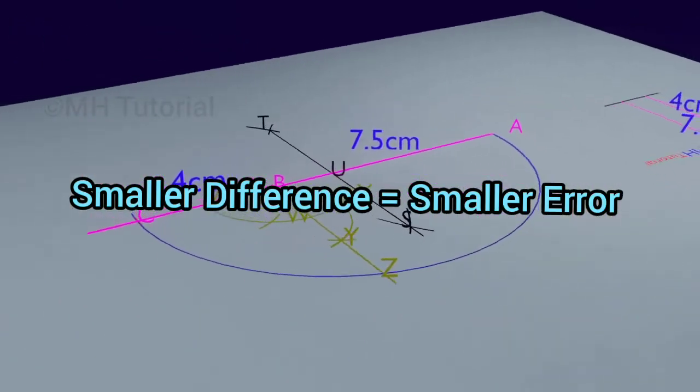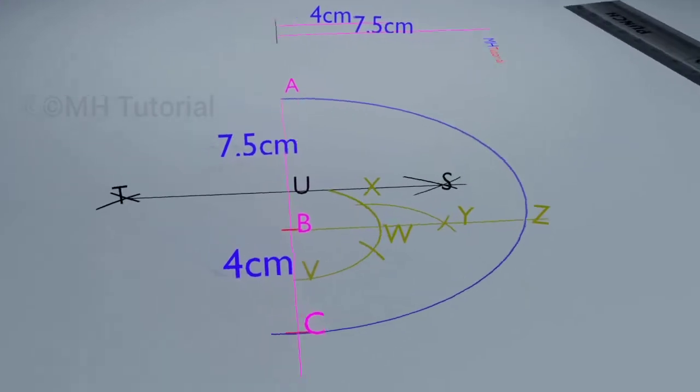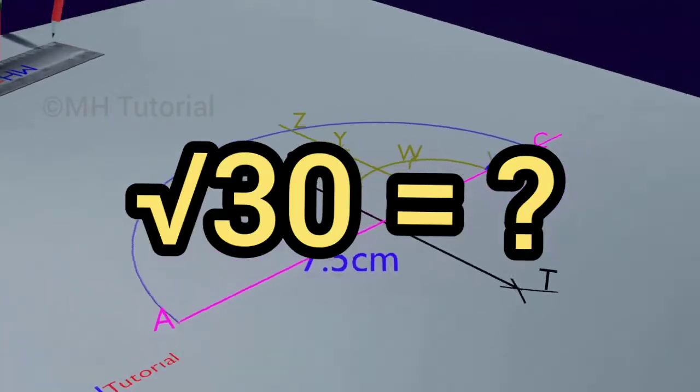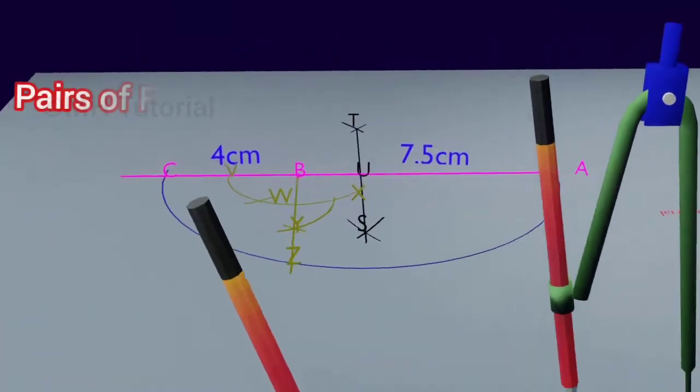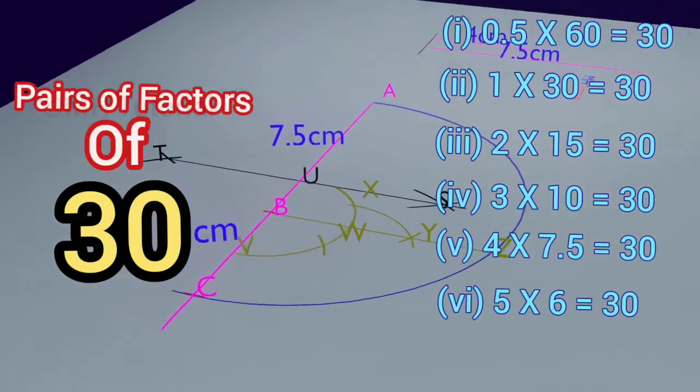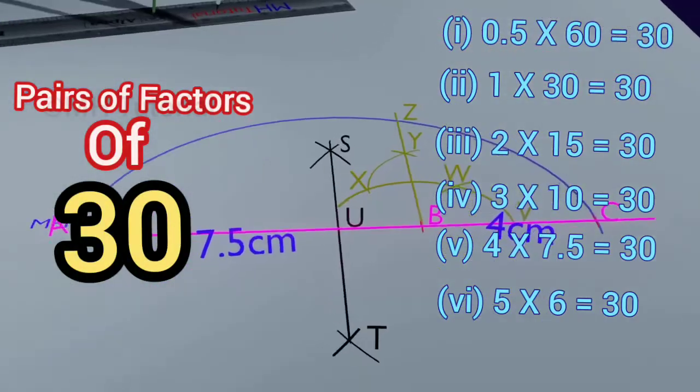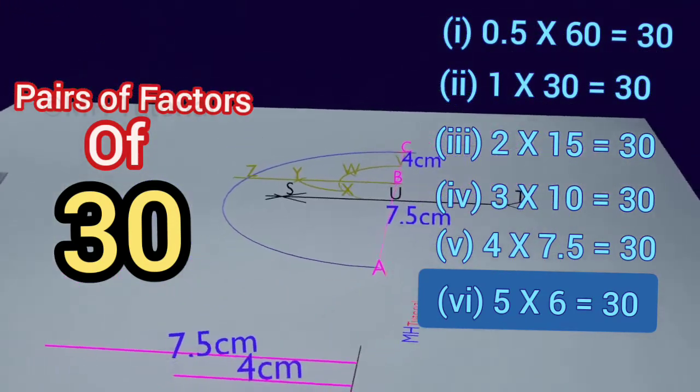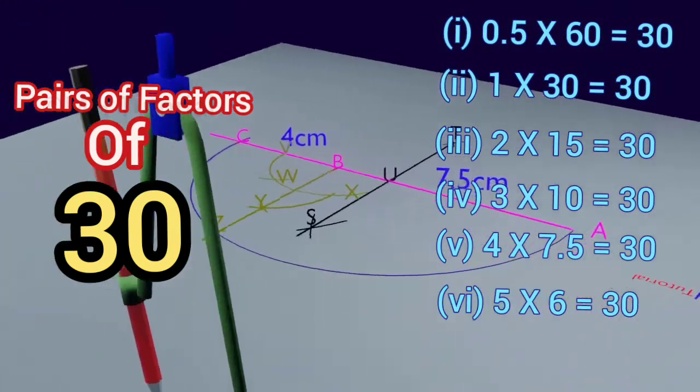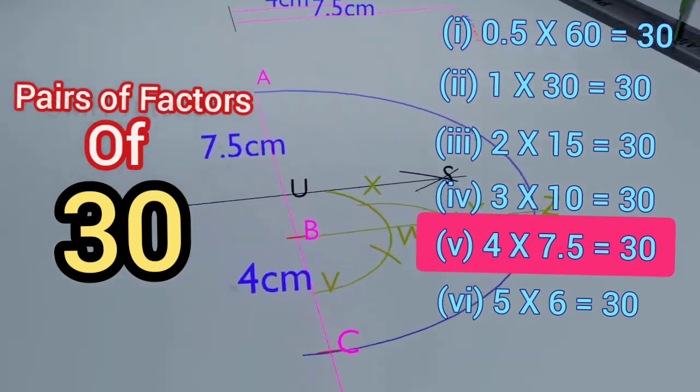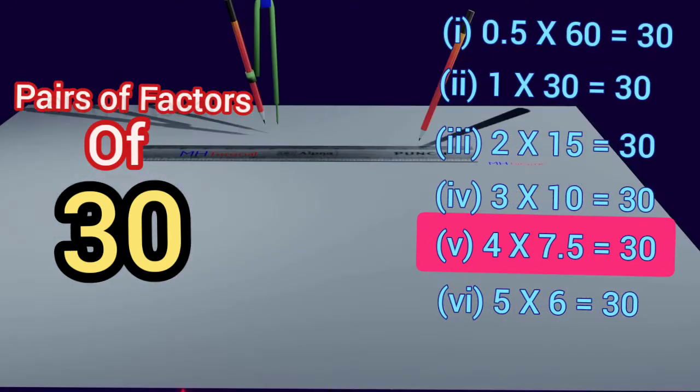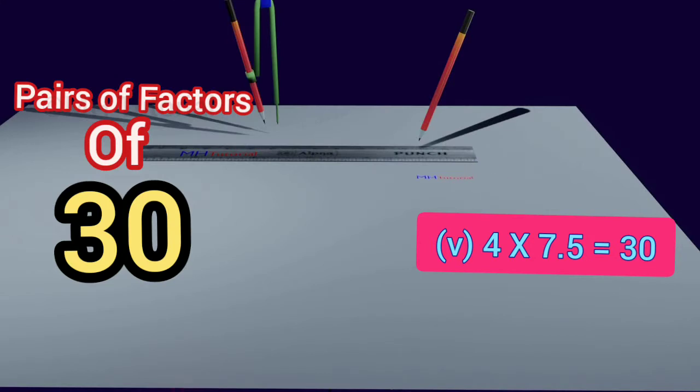In this 3D animation video we will now calculate the square root of 30. For this we have to choose a pair of factors from the list shown here. Choosing the pair of 5 and 6 would have been better, but I would like to show you how much error could occur if the pair of 4 and 7.5 was taken. So watch the video till the end, because after calculating the square root I will show you how many percentage of errors I get.